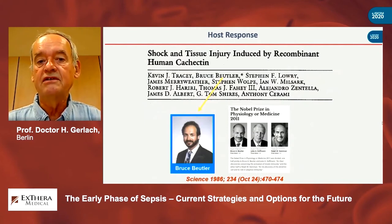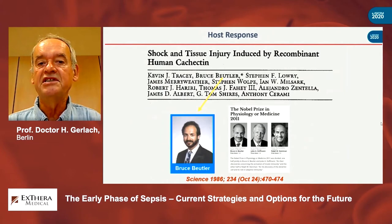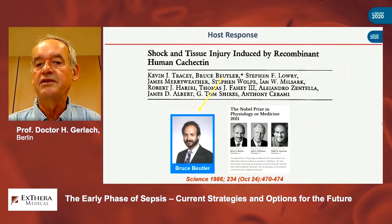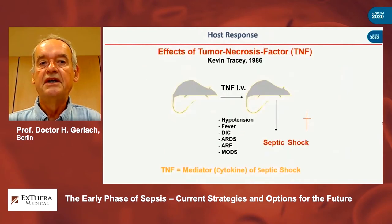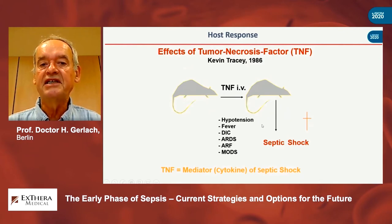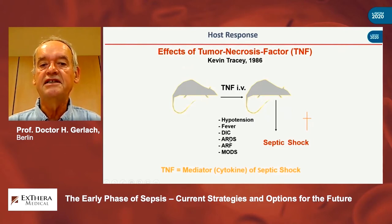Tumor necrosis factor is one of the main molecules which induces this kind of endothelitis, formerly known as cachectin. For the discovery of this mechanism, Bruce Beutler and others received the Nobel Prize some years ago. What Kevin Tracy and Bruce Beutler found in 1986 was the fact that these body-own factors, like tumor necrosis factor, are inducing — with the endothelitis — septic shock and all consequences of organ dysfunction, like hypotension, fever, DIC, lung, renal failure, or multi-organ failure.